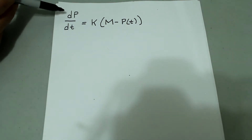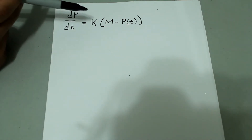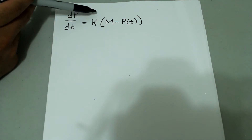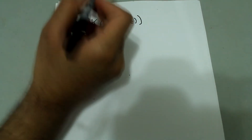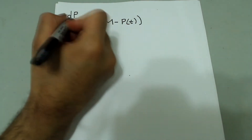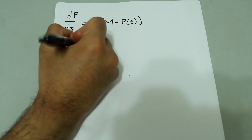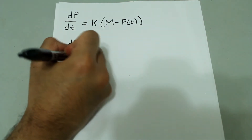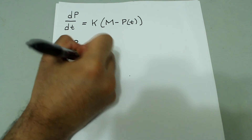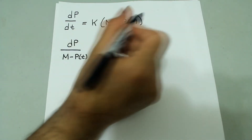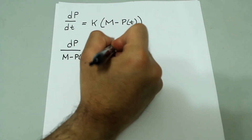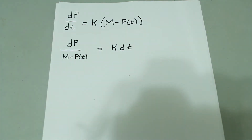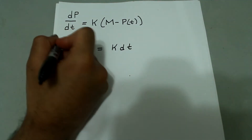What we're going to do is multiply both sides by dt and divide both sides by m minus p of t. So we'll have dp over m minus p of t equal to k dt. And now we can integrate both sides.